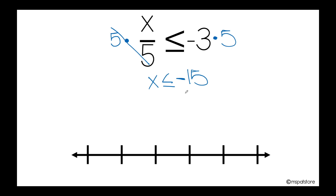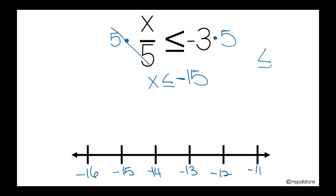Now I'm ready to graph my solution. So I can start my number line with negative 16, negative 15, negative 14, and so on. In this case, I need to analyze what the solution is telling me. Basically, x could be any number less than or equal to negative 15. As I have less than or equal, remember, less than or equal or greater than or equal means I need to use a closed circle when graphing on my number line.